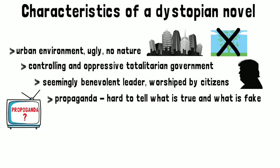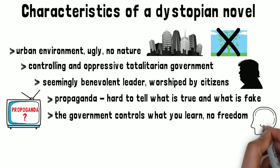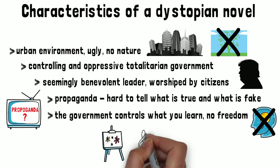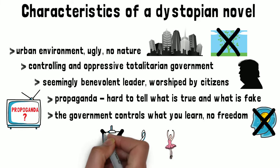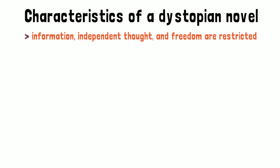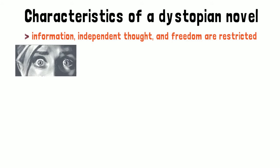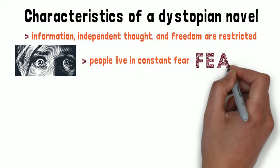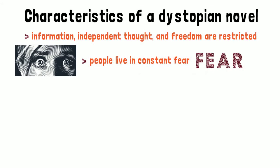Education is controlled by the government, and people are not encouraged to think for themselves. Art and other personal expression, like music and dance, are suppressed in favor of a utilitarian society. Information, independent thought, and freedom are restricted. Fear controls people's actions — fear of the government, fear of reprisal, or being reported if they step outside the norm.